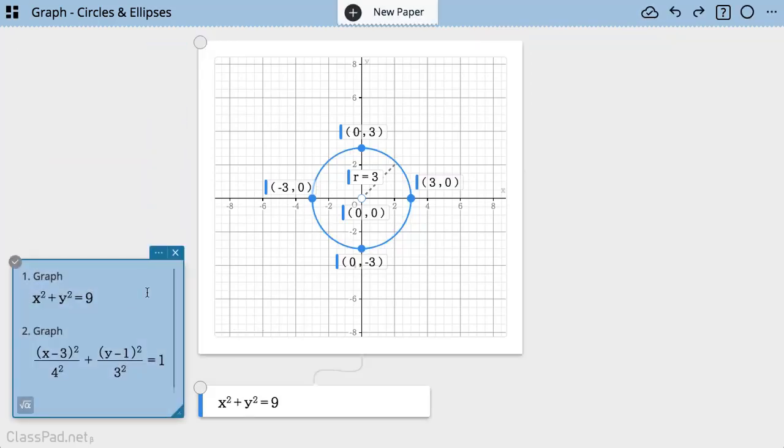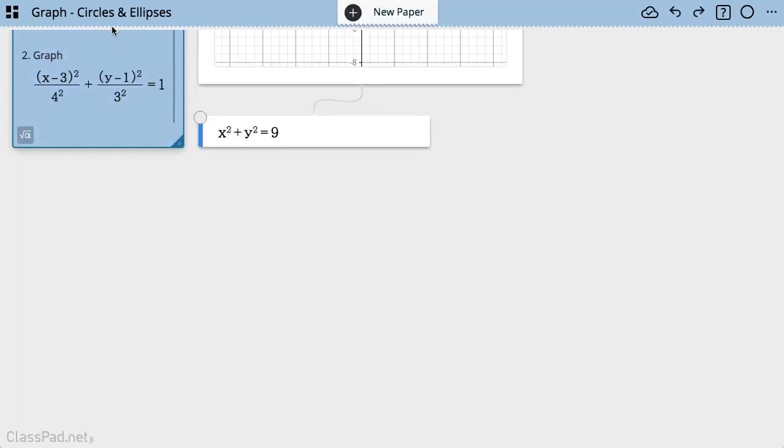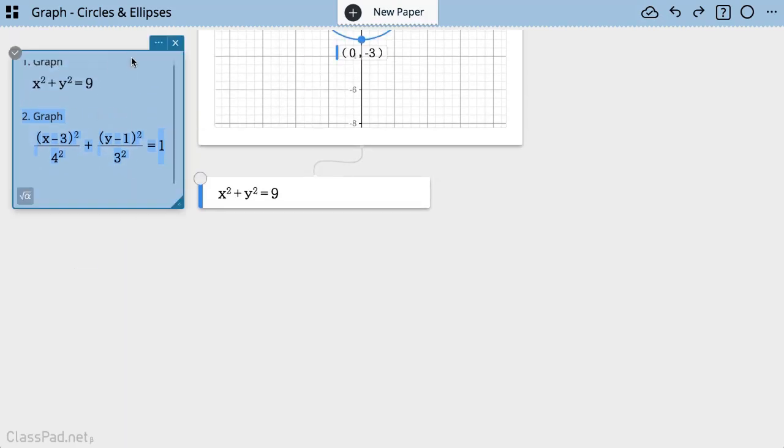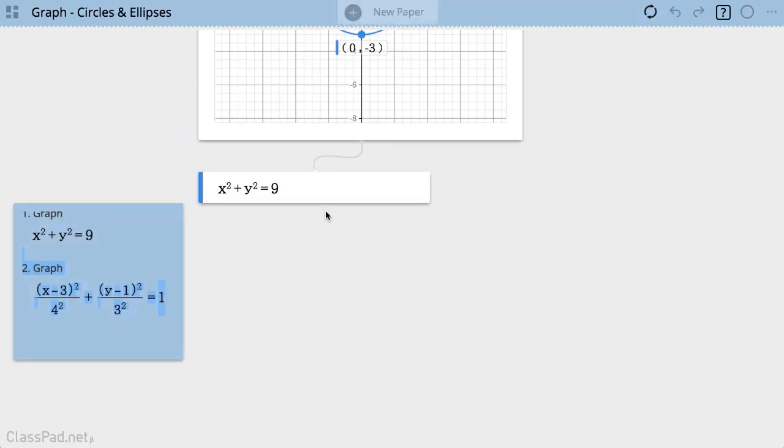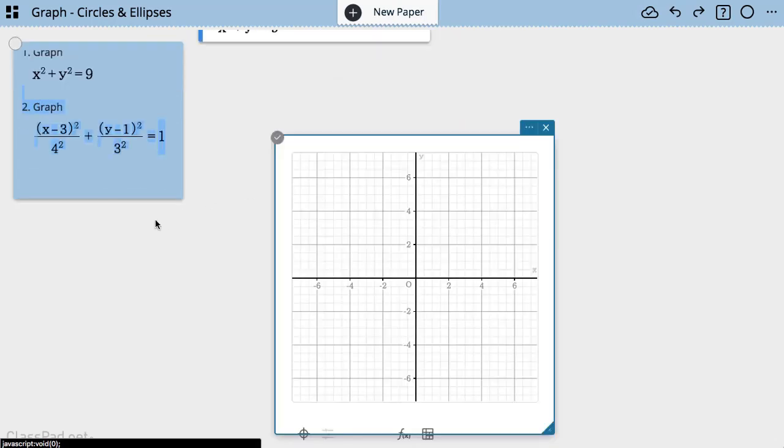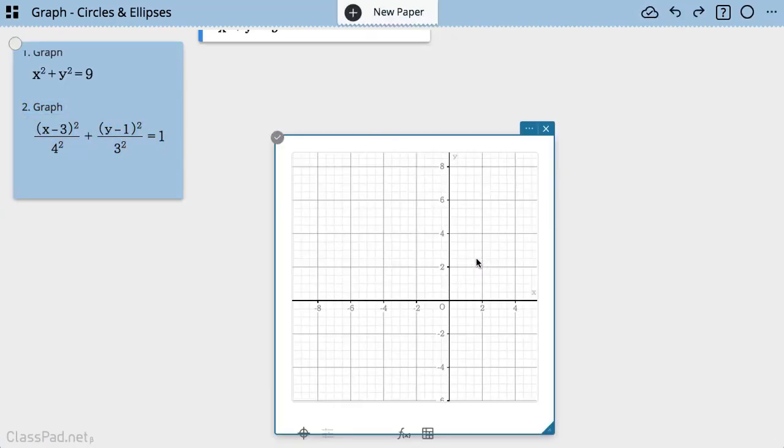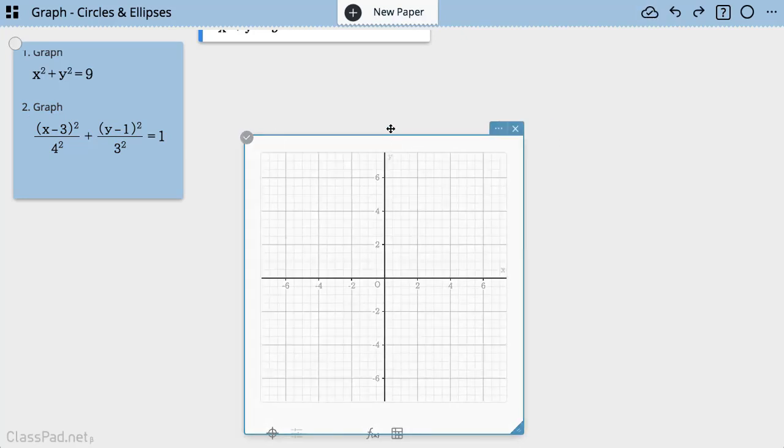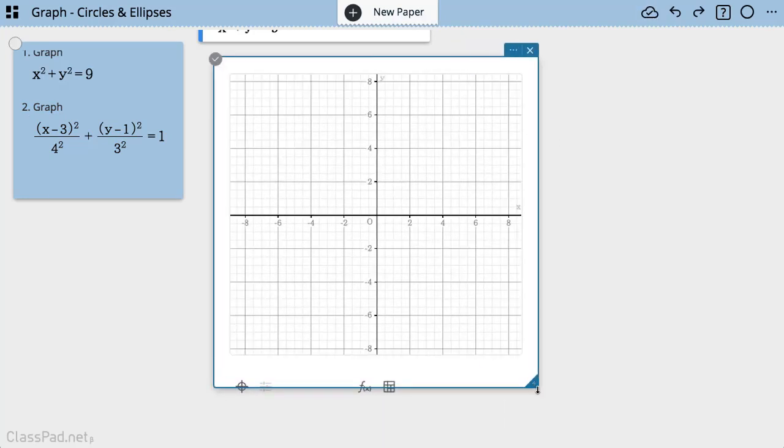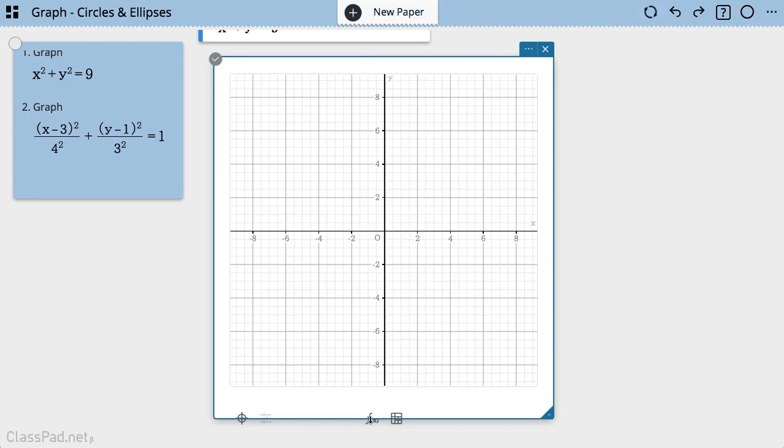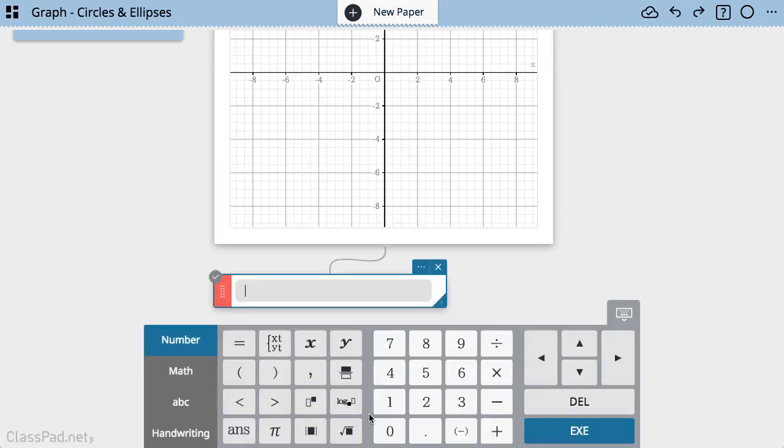All right, moving on. I'm gonna actually open up another graph sticky and just kind of scroll down a little bit, move that down here a bit and open up another graph sticky and graph my ellipse. Now make the screen a little bit bigger, so click on f of x.